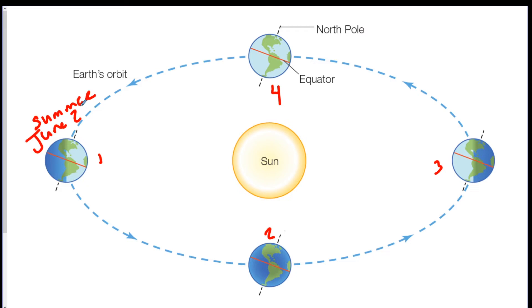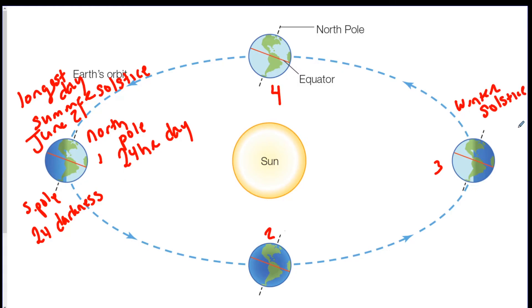This happens on June 21st when we are in this position and we have our longest day of the year. 15 hours a day and 9 hours a night. Interestingly enough the North Pole at this point is getting 24 hours of daylight and the South Pole here is getting 24 hours of darkness. This is also called the summer solstice. Now we can find out where winter is. Winter is going to be directly across at number three over here. This is called the winter solstice and this happens on December 21st. On this day the hours are opposite. The North Pole is going to get its 24 hours of darkness and the South Pole gets 24 hours of daylight. It's the shortest day of the year with only nine hours of daylight and 15 hours of darkness.